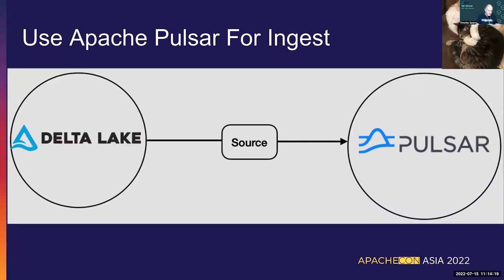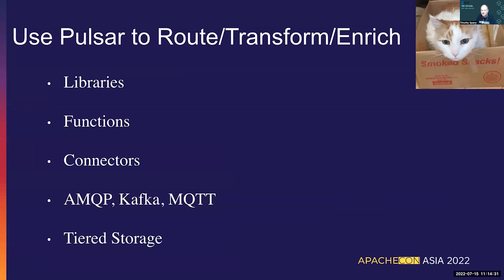I can use Pulsar to ingest data — it has sources for things like Delta Lake. Once data is in Pulsar, it can easily be shared with other applications or users. Route and transform it, enrich it with libraries or in-client code. Functions split out air quality types and reformat the data. Those connectors store it when done. Being able to support multiple protocols — AMQP, Kafka, MQTT, Native Pulsar — and tier out to simple storage without writing any code is great.